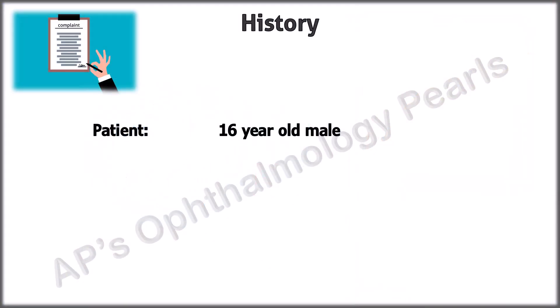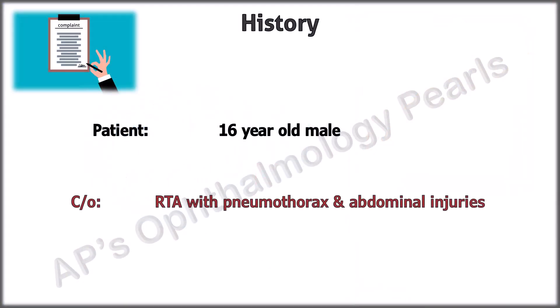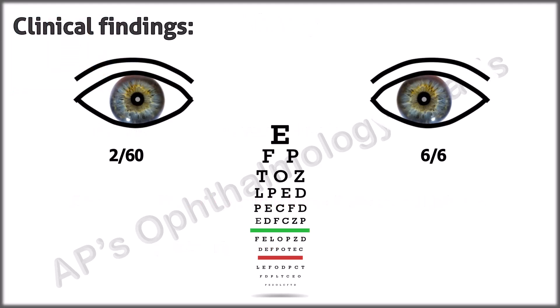A 16-year-old male involved in a road traffic accident with severe injuries including pneumothorax and abdominal injuries, who had undergone abdominal surgery, complained three days after the trauma of diminished vision in the right eye. On presentation, uncorrected visual acuity was 2/60 not improving in the right eye, and 6/6 unaided in the fellow eye.